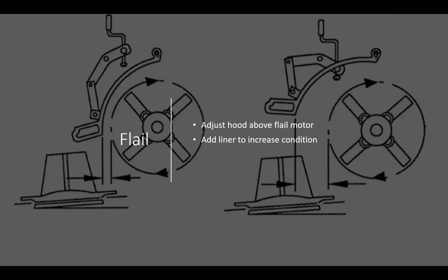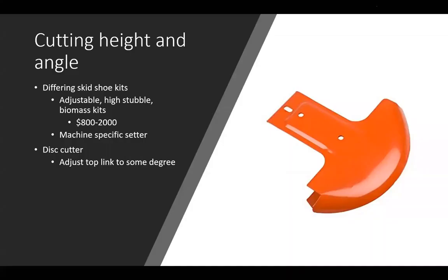For the flail conditioner, we're trying to achieve the same goal: crimp the biomass, strip some of the wax off, and increase the drying rate. Adjust the hood above the flail motor — you can add a liner to help increase conditioning or adjust it closer. Make sure they're operating in an effective manner.